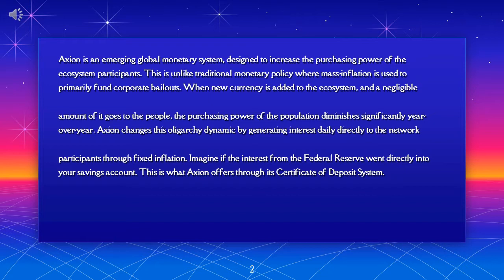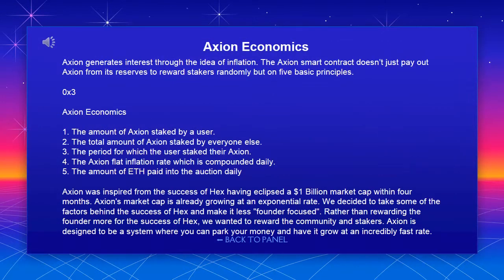Axion changes this oligarchy dynamic by generating interest daily directly to the network participants through fixed inflation. Imagine if the interest from the Federal Reserve went directly into your savings account — this is what Axion offers through its certificate of deposit system.